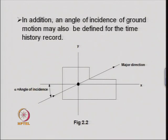In addition, there is an angle of incidence of the ground motion, defined with respect to the principal direction of the structure. For example, in figure 2.2, one of the principal directions of the structure lies along the x-direction, and alpha is the angle of incidence — that is, the major direction of earthquake ground motion or seismic wave propagation is at an inclination of alpha with the major axis.